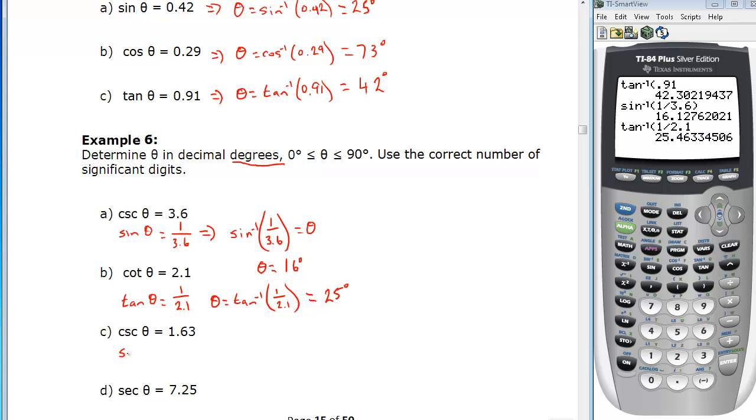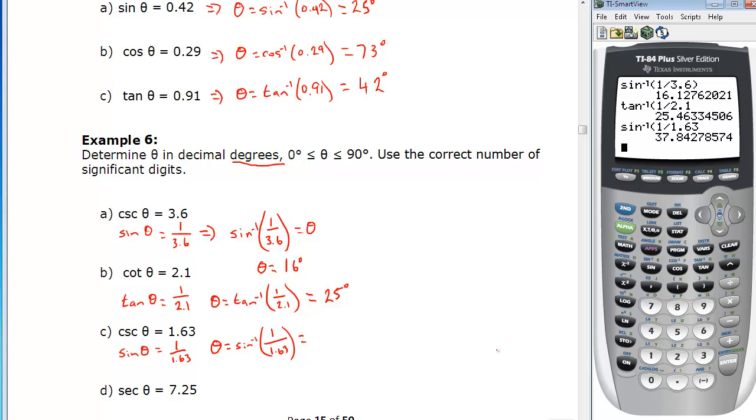Cosecant, reciprocal sine of theta. Reciprocal of 1.63 is 1 over 1.63. Solving then theta gives us the sine inverse of 1 over 1.63, which is sine inverse of 1 over 1.63. Three significant digits this time, so 37.8 degrees.